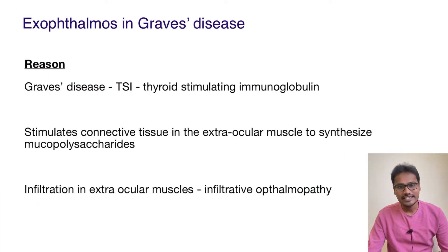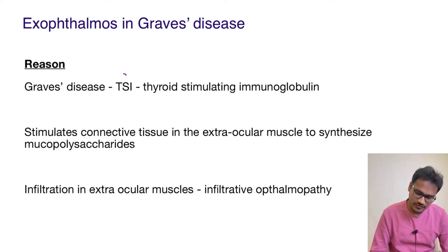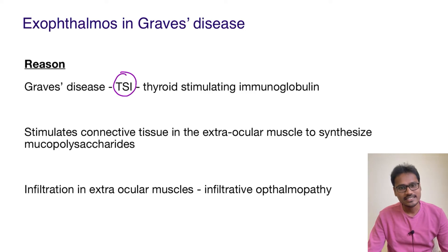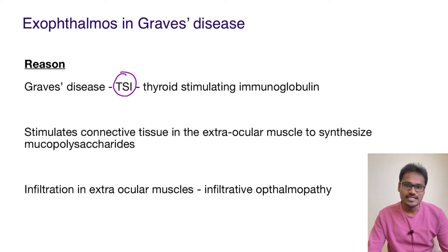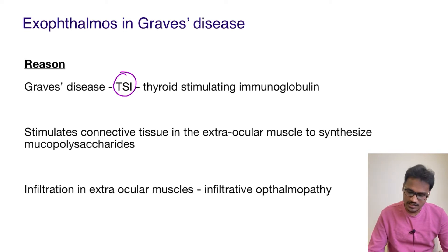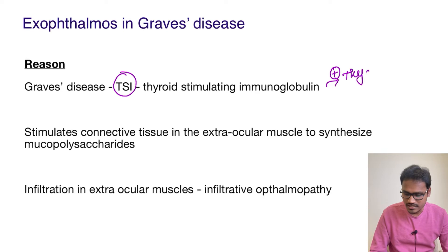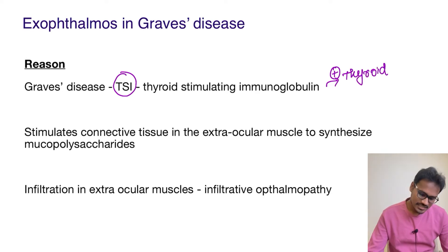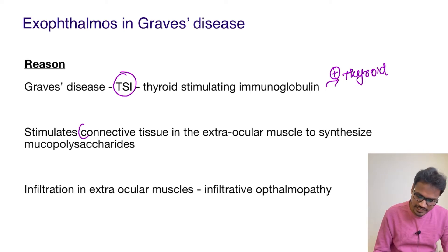First, in Graves' disease — which is an autoimmune disease — there is a specific component called TSI, or Thyroid Stimulating Immunoglobulin. This TSI stimulates the thyroid, obviously causing hyperthyroidism. But why exophthalmos? This TSI can also stimulate the connective tissue in the extraocular muscles.